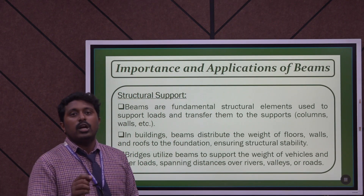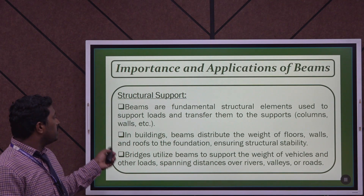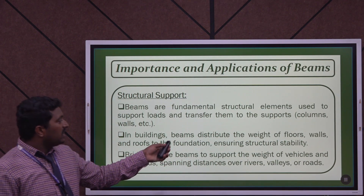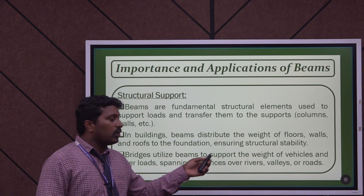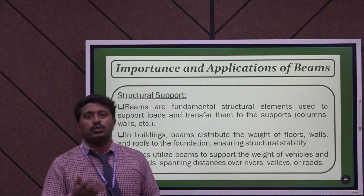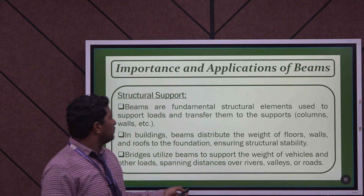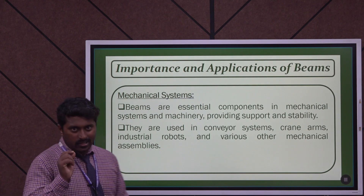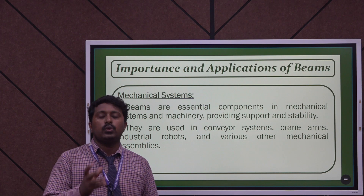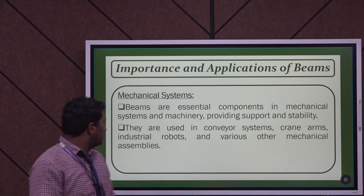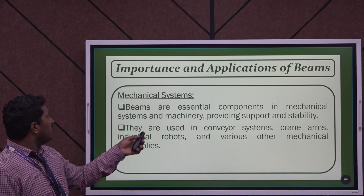Beams are mainly used to maintain structural stability in civil engineering. Bridges also utilize beams to support the weight of vehicles and other loads spanning distances over rivers, valleys, and roads. Beams are mainly used to equally distribute loads in structures like bridges. In mechanical engineering, beams are mainly used to provide support and stability to machines and mechanical systems. They are used in conveyor systems, cranes, robots, and other mechanical assemblies.